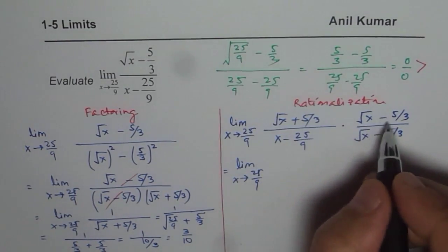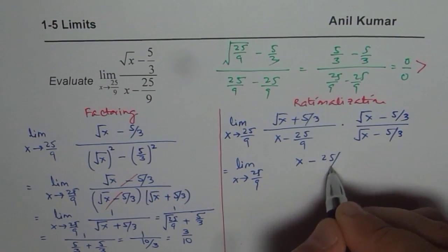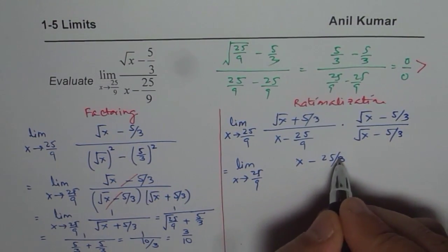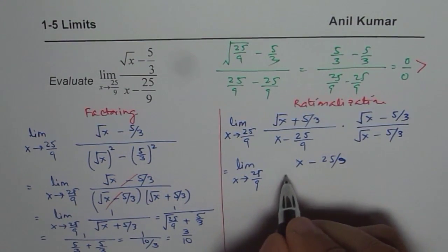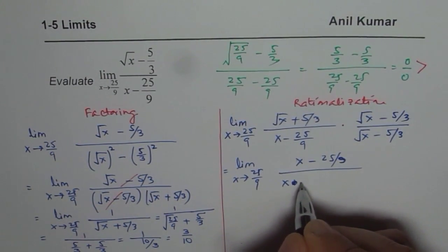You will get difference of squares in the numerator which is x minus square of 5 over 3 which is 25 over 9, sorry, square of 3, right?